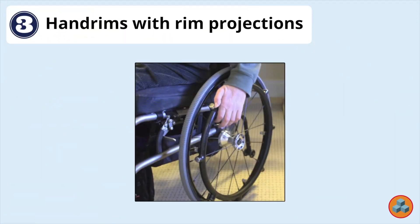Option 3, hand rims with rim projections. Hand rims with rim projections are a necessary wheelchair modification for patients with grip deficits or a hand deformity. The rim projections allow the patient to more effectively grip the hand rims so that they can still manually propel the wheelchair. A patient with a C4 spinal cord injury has no ability to manually propel a wheelchair, even with rim projections, due to the lack of innervated upper extremity musculature. Hand rims with rim projections add depth to the wheel and allow the patient to more easily propel the wheelchair.